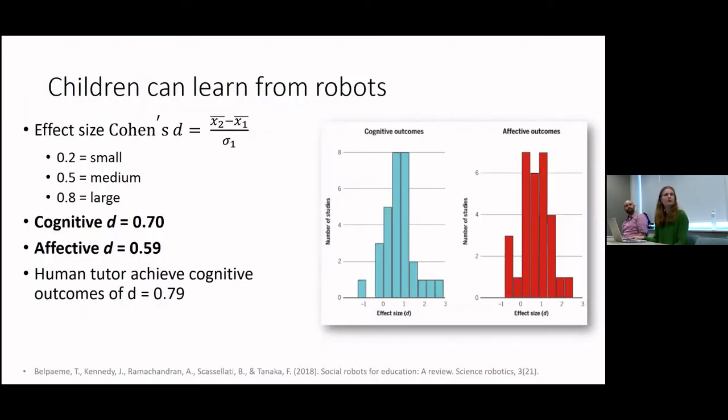We already know from many studies that children can learn from robots. Robots can teach children many things and they're quite good at it. In a review, we saw that robots are almost as good as human tutors. Of course, these are published papers, so let's take this with a bit of salt. But the experiments were designed for the robots to be as good as possible.